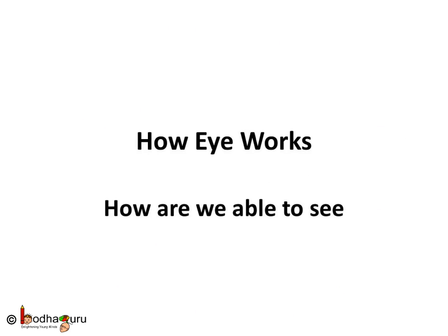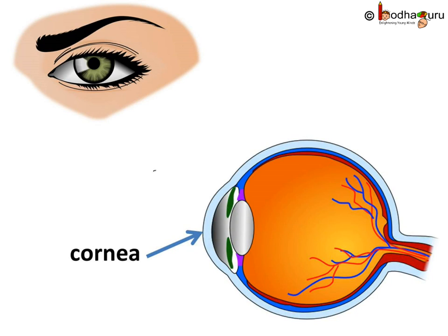Hello everyone. We already know the basic structure of the eyes. So let us understand in detail how the eye works and enables us to see the wonderful world and the colors around us. How are we able to see an object?